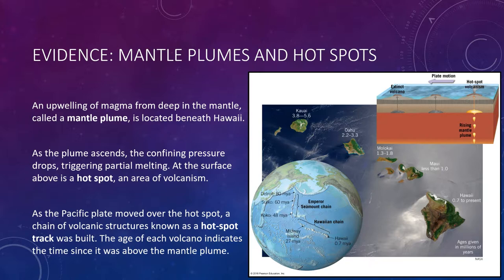Although the mantle plume hypothesis provides a compelling explanation for volcanism that occurs in the middle of a tectonic plate, the existence of a slim mantle plume originating near Earth's core-mantle boundary has not been verified by seismic studies. As a result, some geologists have proposed that the source of magma that generated the Hawaiian chains originated from localized melting in the upper mantle.